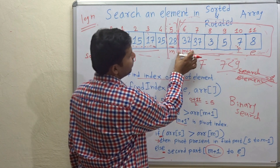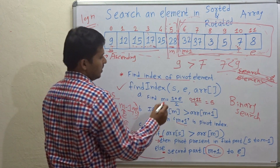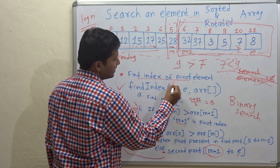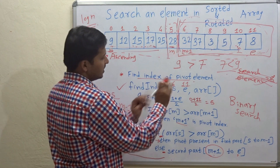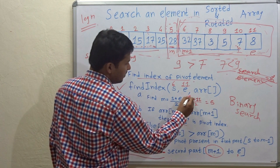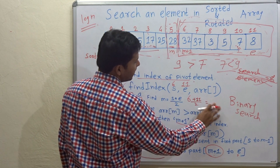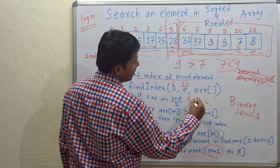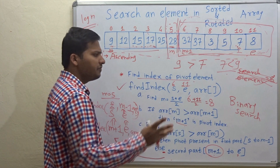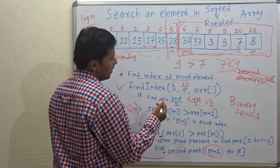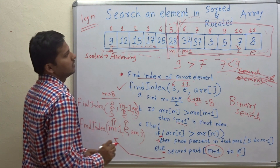Now m+1 to e is our array. So s is 6 and e is 11. We compute m = (6 + 11) / 2 = 17 / 2 = 8 (integer answer). So m is 8 and the middle element is 3.